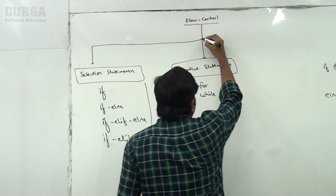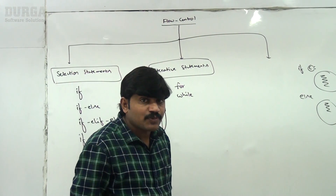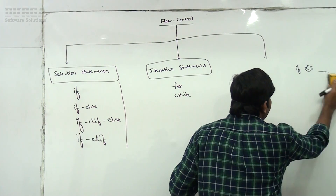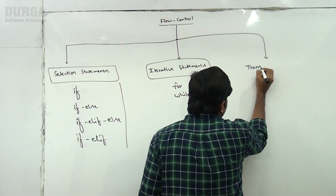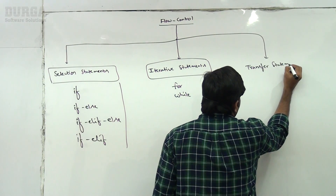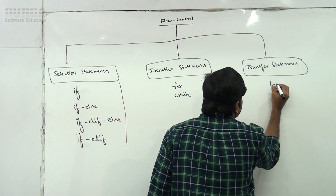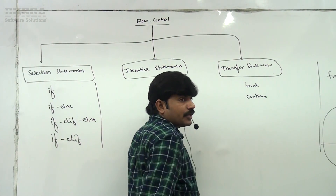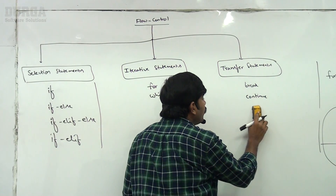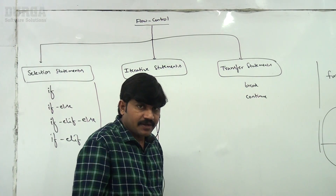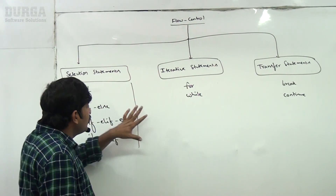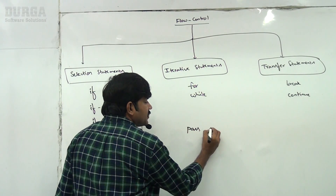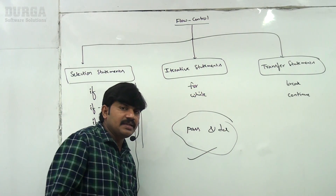The third category is transfer statements. Sometimes we need to transfer control from one place to another. Break and continue are transfer statements. We also need to discuss pass and del keywords as part of the flow control topic.